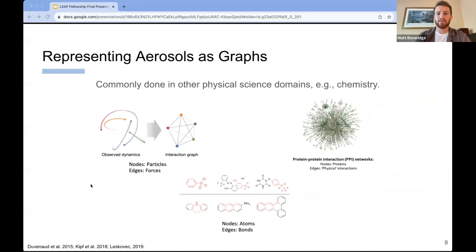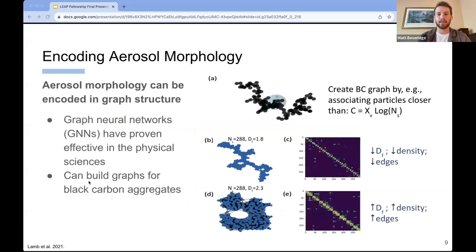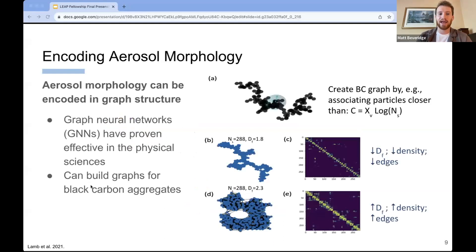One common approach that people have taken in other physical science domains would be representing this type of data as a graph. As you may have noticed, the aggregate has an inherent structure to it, a physical structure with positions in space. For example, with a molecule, you do this with atoms and the bonds between them representing the edges. Similarly, what we would do in our case would be we would represent the aggregate as nodes, which would have the characteristic properties of black carbon, and then edges representing the relative distance between each node in that aggregate.